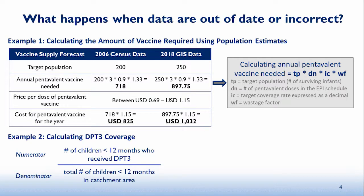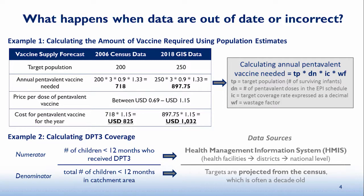GIS can also help with monitoring and indicators. For example, for DPT3/Penta3 coverage, GIS can properly estimate the target population — the denominator. Previously with census projections, coverage would sometimes come out over 100%, and we wouldn't know whether it was data quality of the numerator, whether data had been inflated, or whether the target population was not properly estimated. GIS helps improve data quality and indicators.